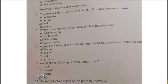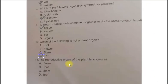The next question. The reproductive organ of the plant is known as A. Flower. B. Root. C. Stem. D. Leaf. The correct one is A. Flower.